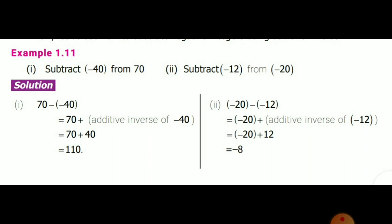Second one: minus 20 minus (minus 12). The given number is minus 20; we subtract minus 12. Minus of minus means take the additive inverse — the additive inverse of minus 12 is plus 12. So minus 20 plus 12. Since one number is positive and one is negative, subtract the smaller from the greater: 20 minus 12 equals 8. The greater number is minus 20, so the answer is minus 8.